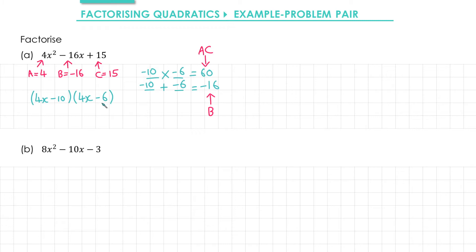The final step is to cancel out the factor of 4 that we don't want. We can do that from either bracket or both. In this case, the terms in the first bracket have a common factor of 2, so we'll divide both terms by 2. That gives us 2x minus 5.